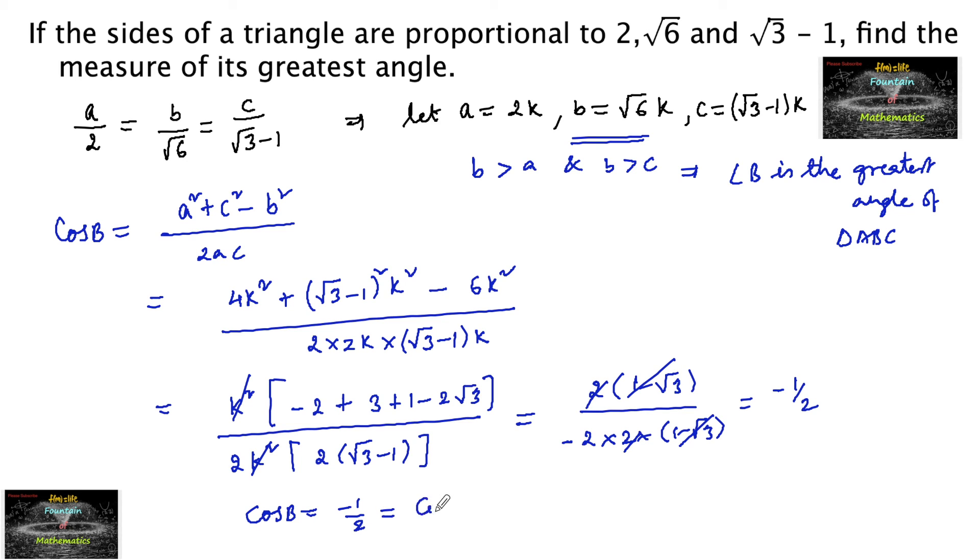Let us consider cos 90 plus 30 degrees, which equals sin 30, so we can write 120 degrees. So we can conclude angle B equals 120 degrees. That is the greatest angle. Thank you.